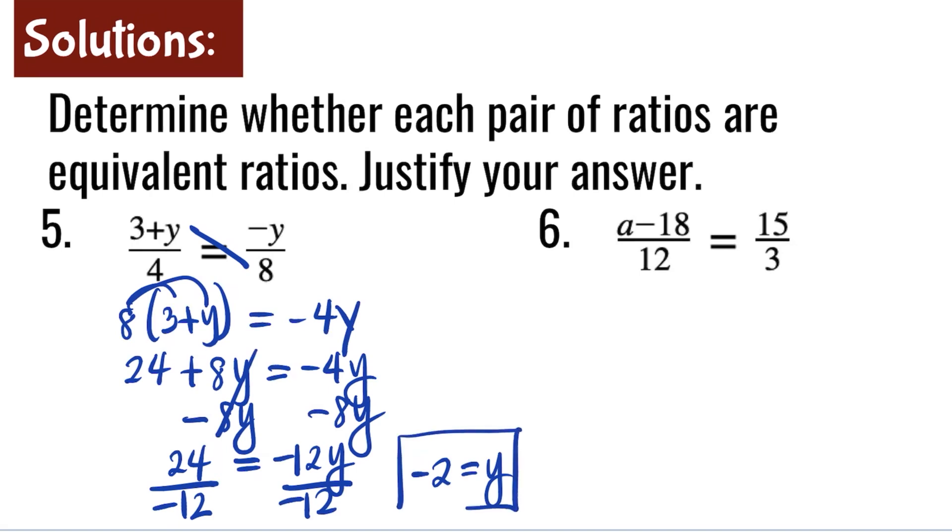Question number 6. a minus 18 over 12 is equal to 15 over 3. For the right side, 15 over 3, this can be reduced as 5 or 5 over 1. So now we can do cross products.